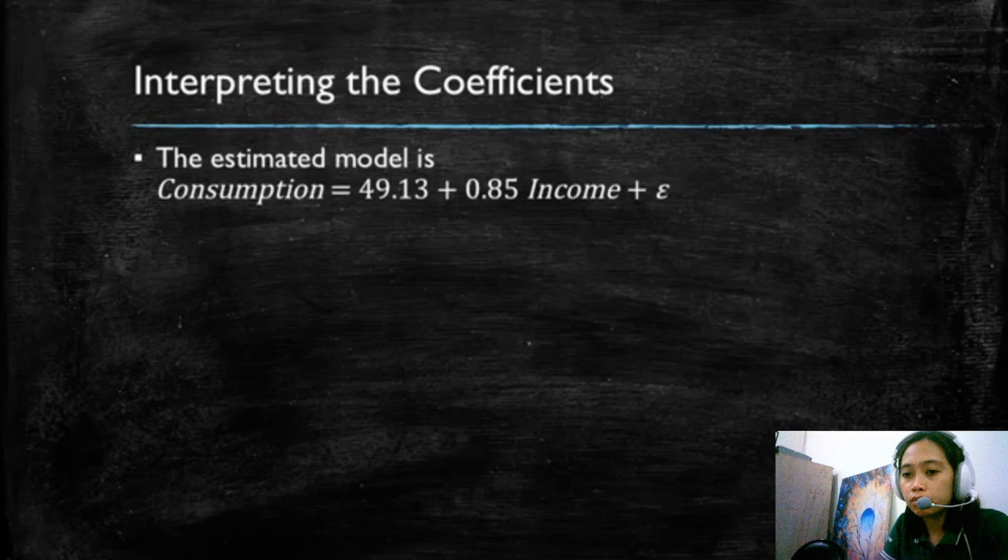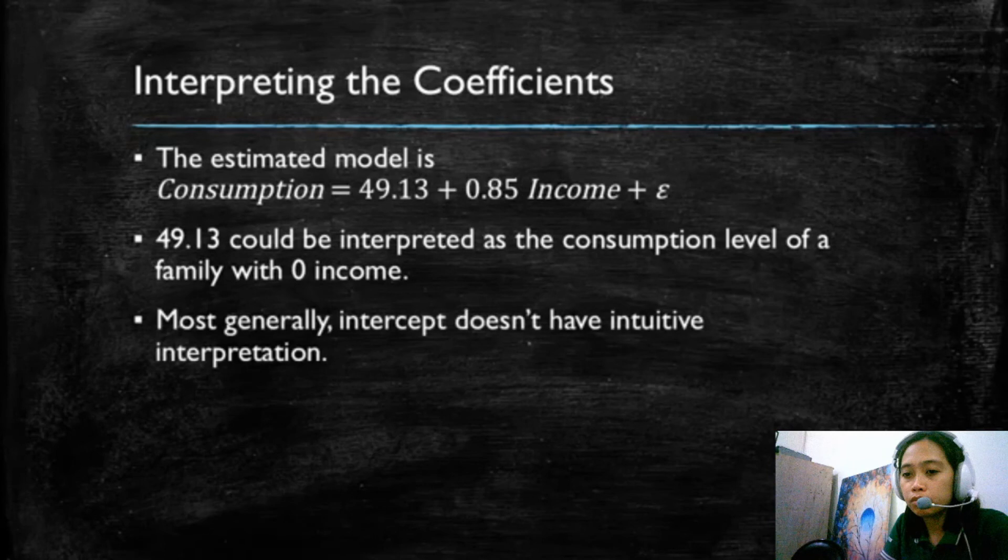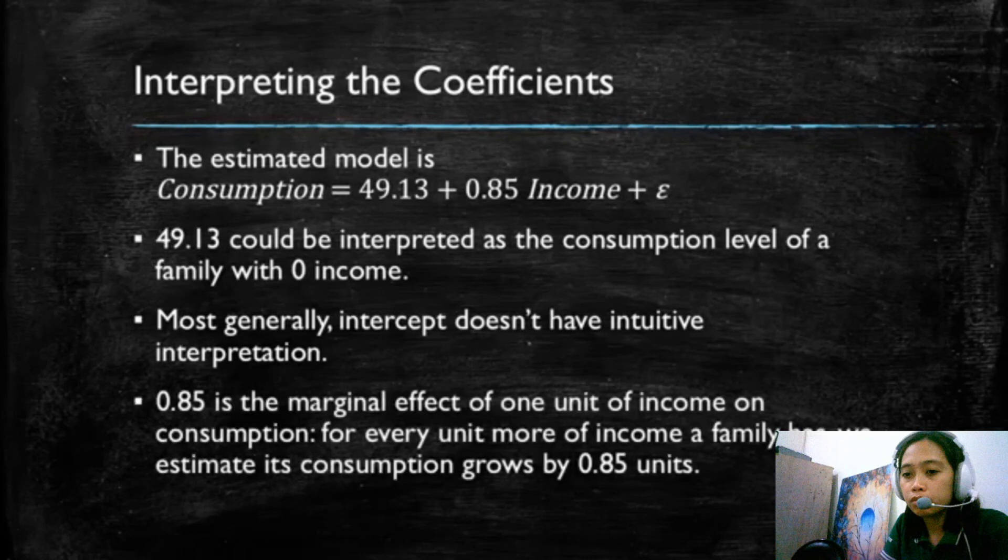Now, what do these numbers mean for our model, which tried to see how did income explain consumption? So let's start with 49.14. If income were zero, consumption would take this value, consumption will be 49.13. So using this, we could interpret the intercept as the consumption level of a family with zero income. Now, this makes little sense unless we assume that there's a state program that offers financial aid to families with no income such that, thanks to this, they can have some consumption. But more generally, the intercept will not have an intuitive interpretation, meaning that in most cases, we will actually be ignoring it.